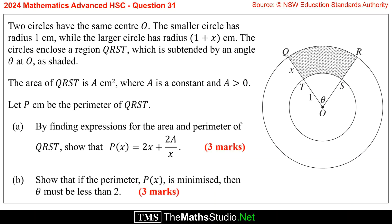Question 31. Two circles have the same center O. The smaller circle has radius 1 cm while the larger circle has radius 1 plus x cm. The circles enclose a region QRST which is subtended by an angle theta at O as shaded. The area of QRST is a square cm where a is a constant and a is greater than 0. Let p cm be the perimeter of QRST.